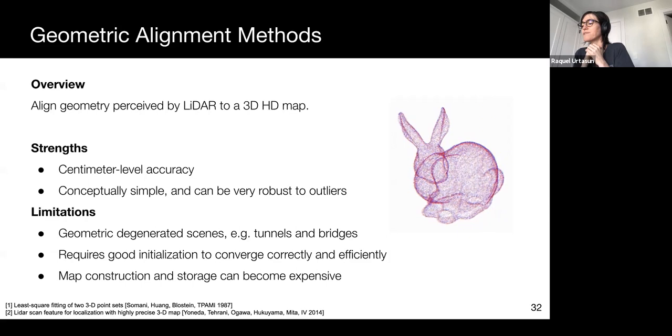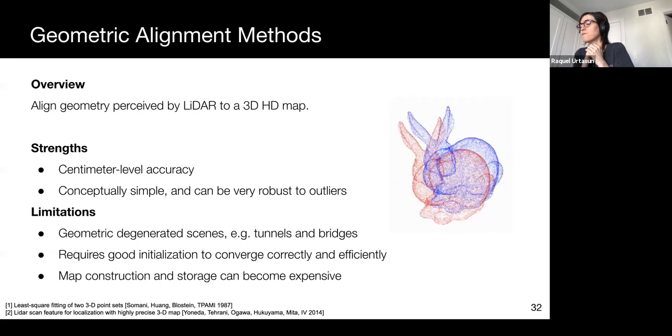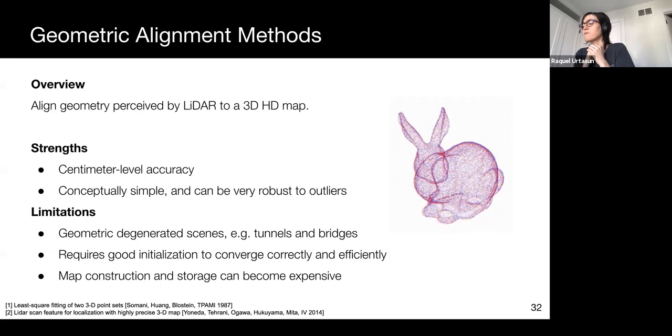The downside is that these methods require a good initialization for convergence, as registration is prone to local optima. Additionally, storing and building 3D geometric maps can be challenging and expensive.